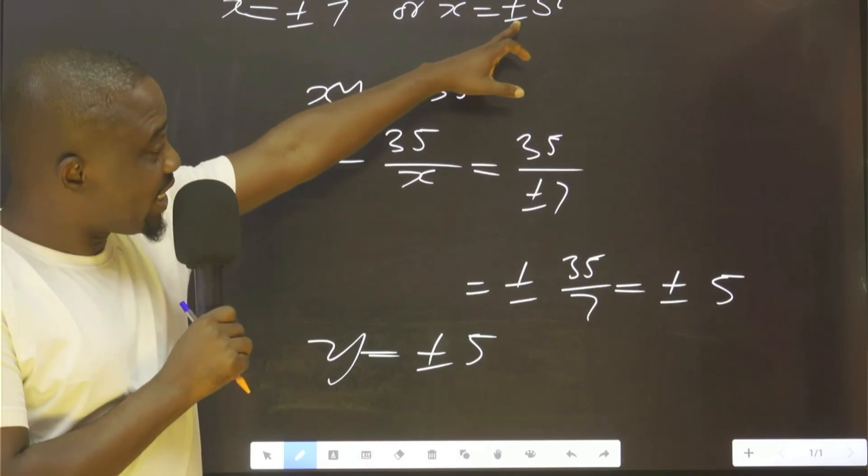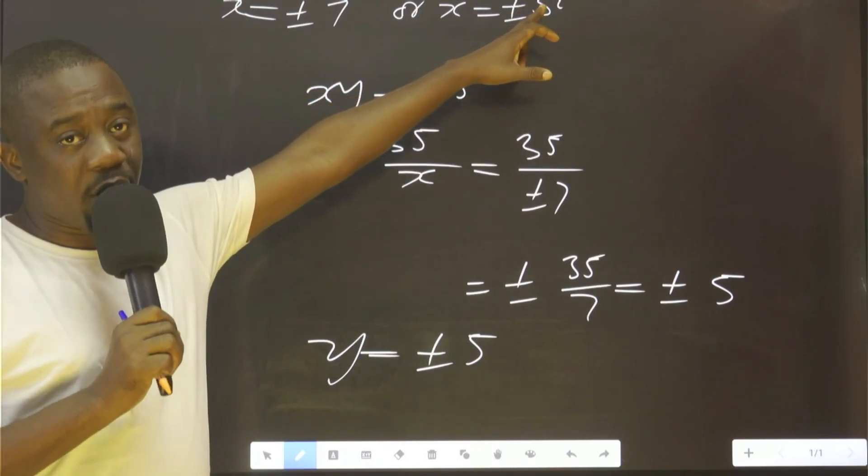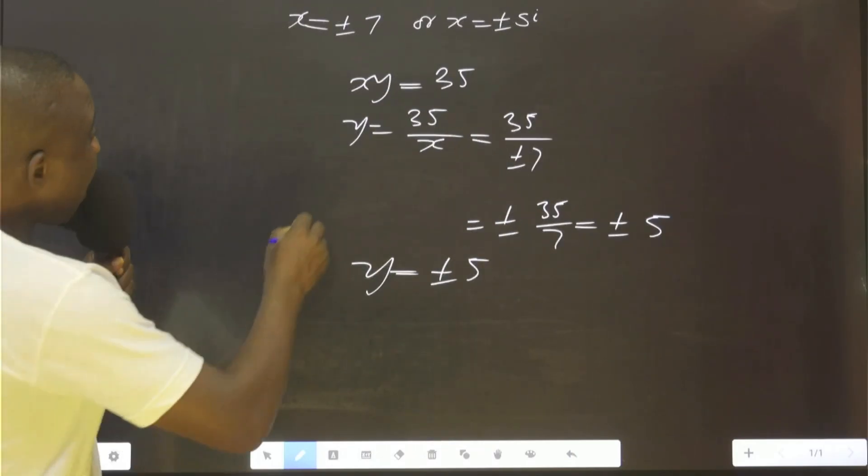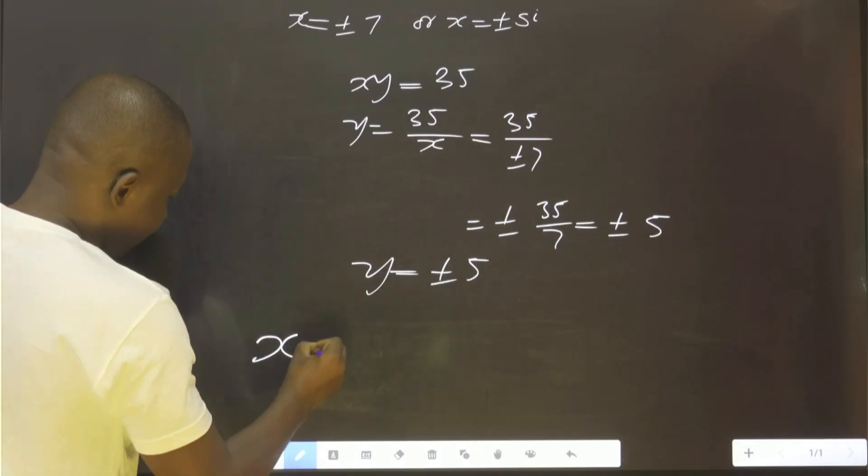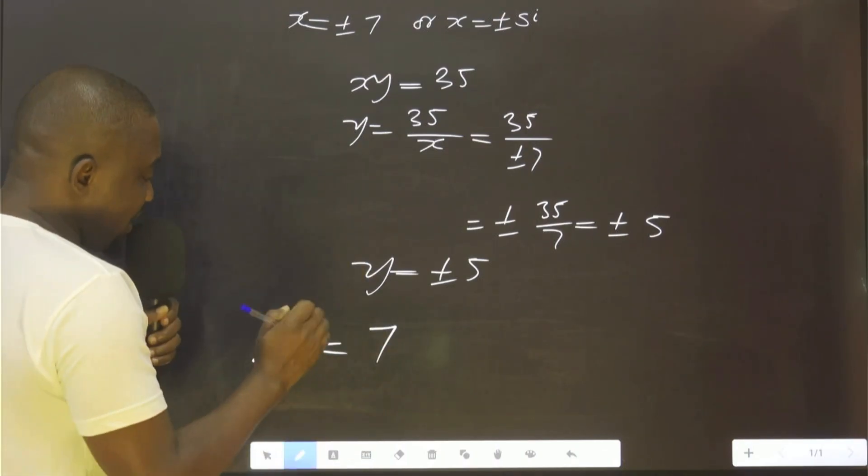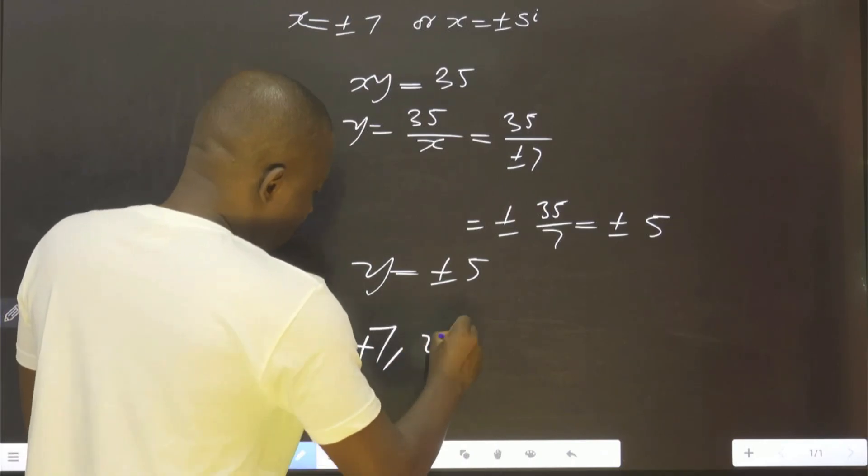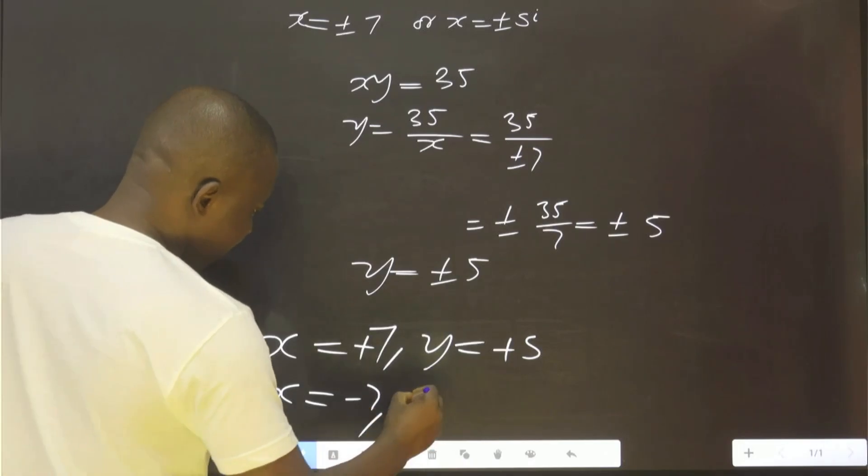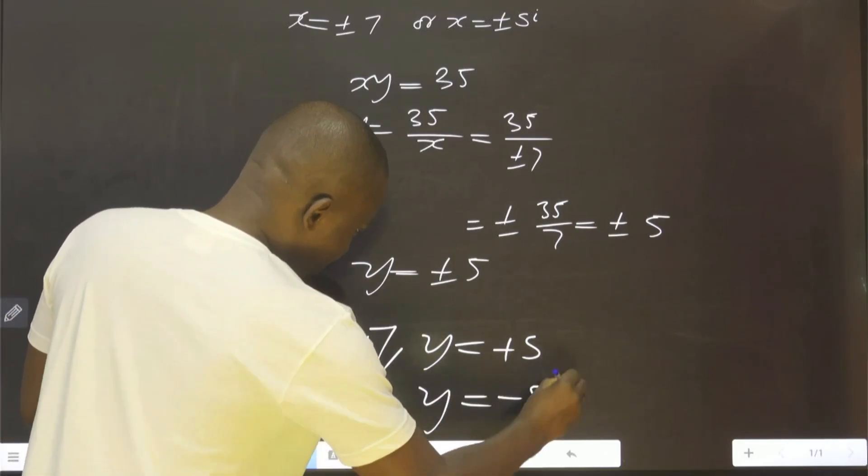We don't need to substitute this to get y because of the complex number. Therefore, we can conclude that when x = 7, y = 5. And when x = -7, y = -5. This is the solution.